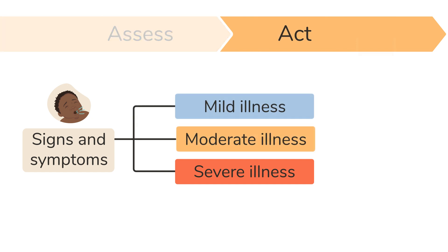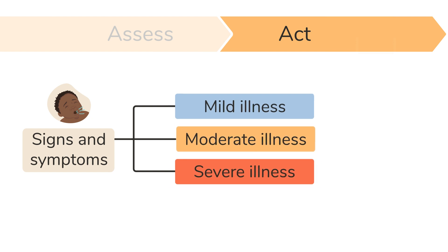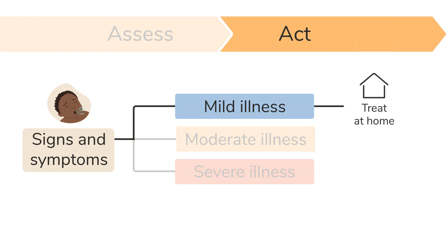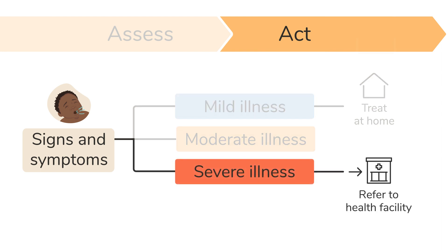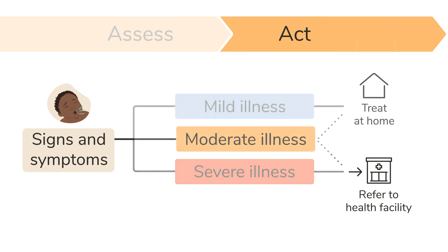Then take action based on whether the signs and symptoms you have found indicate a mild, moderate, or severe illness. This may mean advising a family on how to care for their child at home if it is a mild illness, referring the child urgently to a health facility if it is a severe illness or if the child has a danger sign, or deciding on the best next steps for a moderate illness.